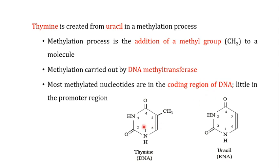If you compare the structure of thymine with uracil, the only difference is that thymine has a methyl group which is absent in uracil. Thymine is created from uracil through a process known as methylation, where a methyl group is added to uracil, converting it into thymine. This methylation is carried out by an enzyme known as DNA methyltransferase.